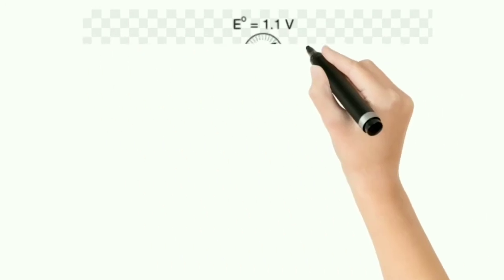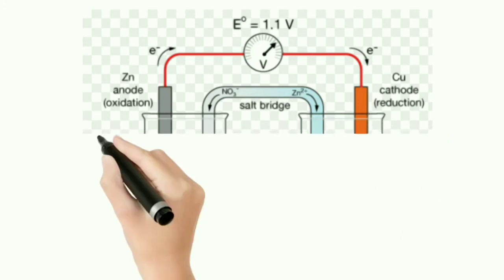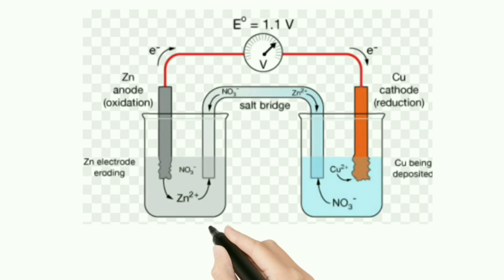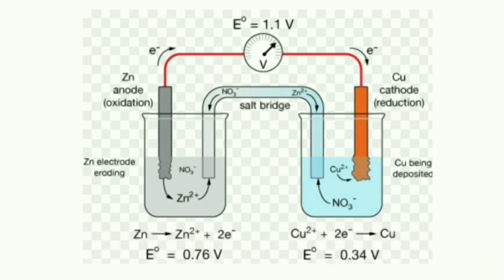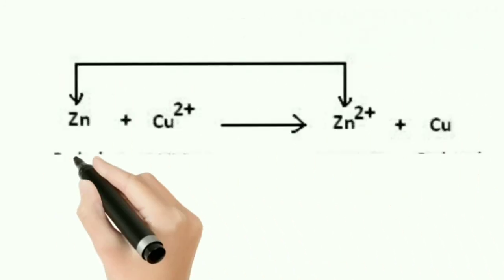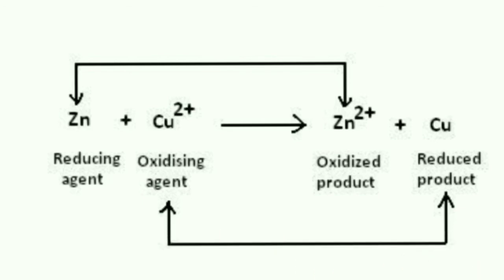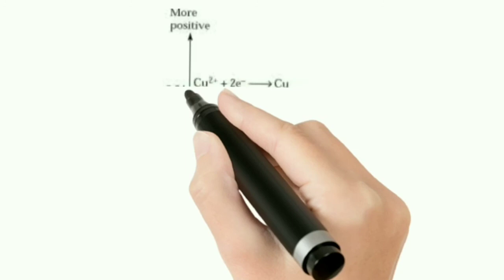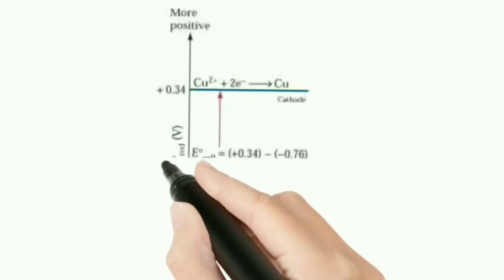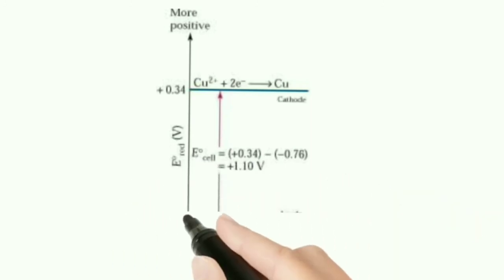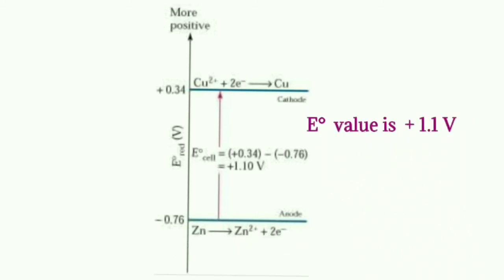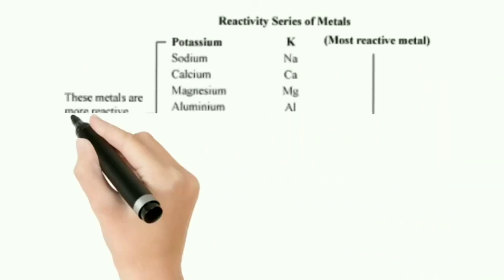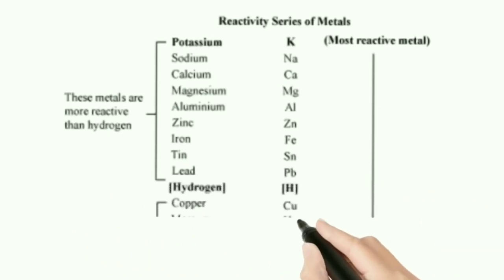The next example is zinc and copper — this is called the Daniel cell. Zinc is connected as the anode and copper as the cathode, because zinc is above hydrogen and copper is below hydrogen in the electrochemical series. The E° values are: −0.76 V for zinc and +0.34 V for copper. The overall reaction is: Zn + Cu²⁺ → Zn²⁺ + Cu. E° cell = 1.1 V — positive, so ΔG° is negative and the reaction is spontaneous.